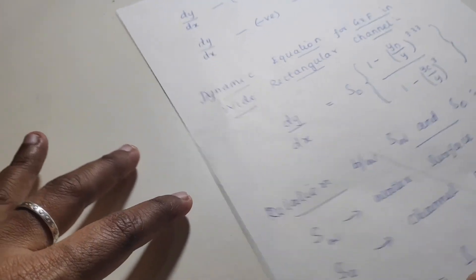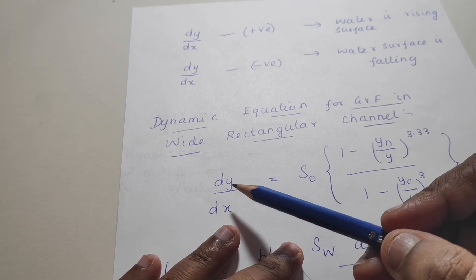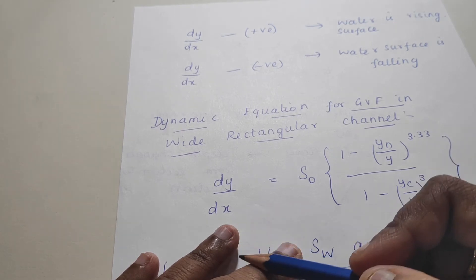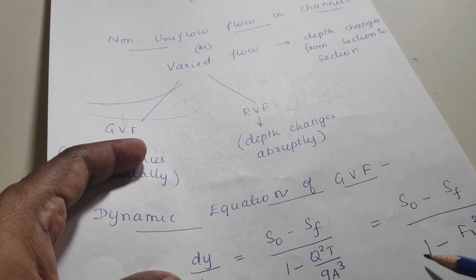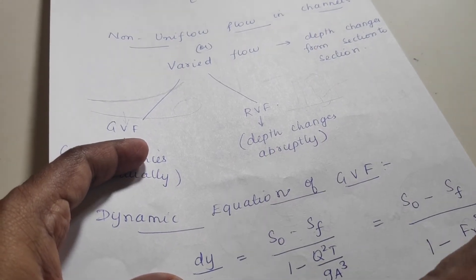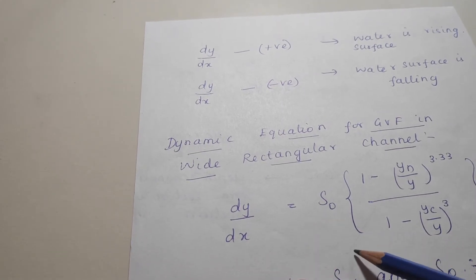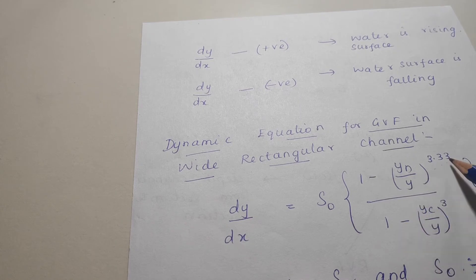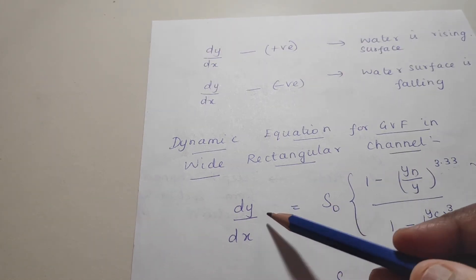Another formula applies when the problem provides normal depth (yn), actual depth (y), and critical depth (yc). In that case, you cannot use the previous two formulas; instead use: dy/dx = S0 × [1 − (yn/y)^3.33] / [1 − (yc/y)³]. This formula is used for wide rectangular channels.